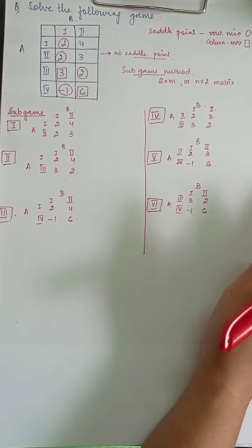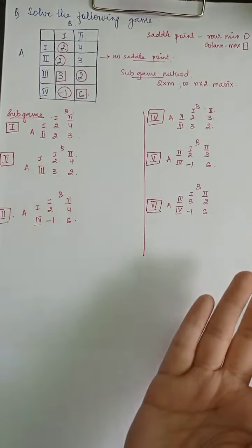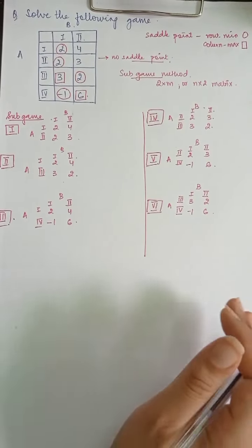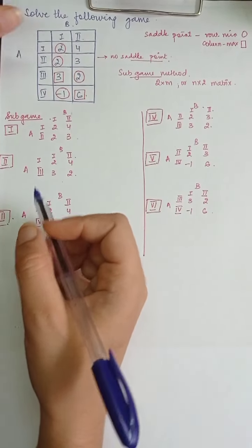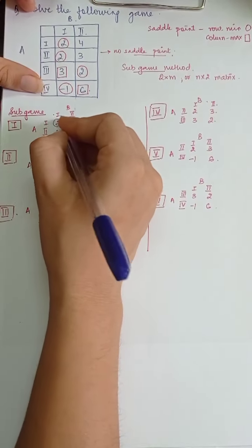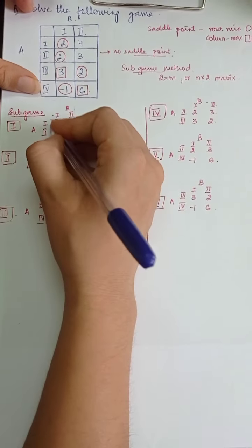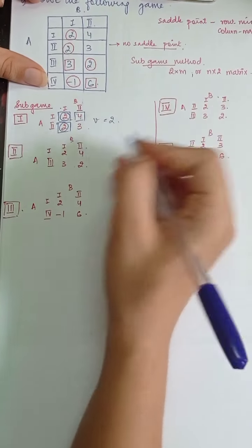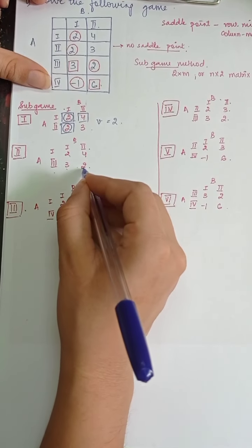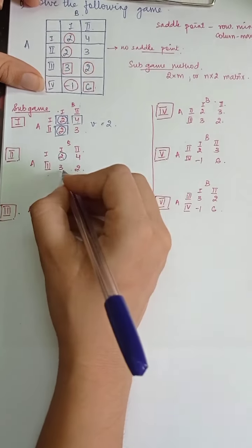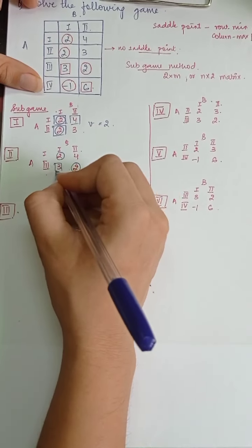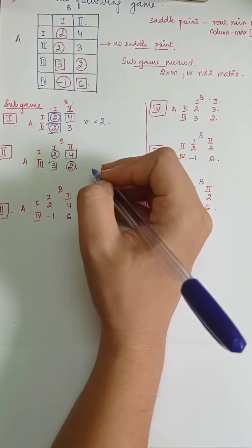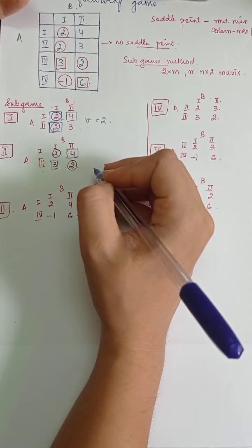Again, the very first step when solving each subgame is to check for a saddle point. For subgame 1: row minima are 2 and 2; column maxima are 2 and 4 — so the value of the game is 2. For subgame 2: row minima are 2 and 2; column maxima are 3 and 4 — here we cannot derive the value through the saddle point, so we will use the odds method.